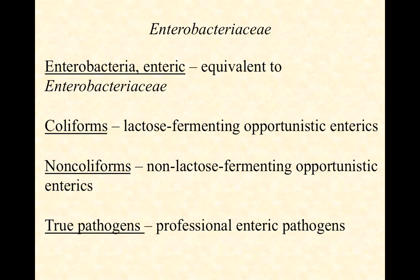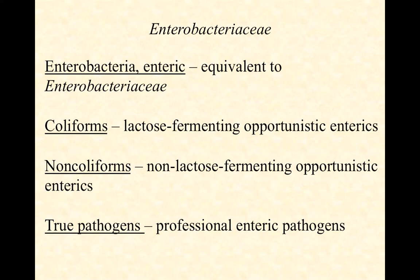Let's get some definitions down. The Enterobacteria, or Enterics — these are the Enterobacteriaceae. Those terms are essentially equivalent. We typically group them three ways: coliforms, non-coliforms, and true pathogens. Coliforms are defined as Enterobacteria that are opportunistic — not professional pathogens, not always causing disease. They can be part of our commensal or mutualistic flora, but they are opportunistic pathogens. A defining feature is that they can ferment lactose. Coliform means coli-like, similar to E. coli. Non-coliforms are also opportunistic, but they don't ferment lactose. We've distinguished them based on their metabolism of lactose, which makes for a quick and easy overnight lab test.